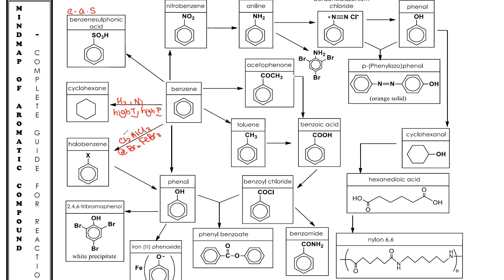For benzene to become toluene, you use CH₃Cl in AlCl₃ — that is Friedel-Crafts alkylation. Note that Cl₂ in FeCl₃ does not need reflux, while Br₂ in FeBr₃ does require reflux according to international reference books. For benzene to become acetophenone (phenylethanone), you use CH₃COCl in AlCl₃ under reflux. This is acyl chloride reacting with benzene — please remember this.